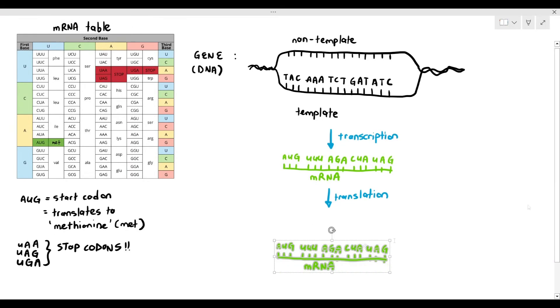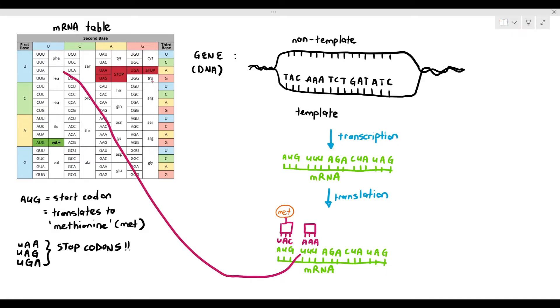Now, if the first codon is AUG, the tRNA has to be an anticodon of UAC, and the tRNA will carry an amino acid called methionine. I've consulted the table. Let's look at the second one. The codon is UUU. The tRNA has to have an anticodon of AAA, because of complementary base pairing. Let's consult the table. UUU anticodon, which amino acid does it translate to? It translates to an amino acid called phenylalanine, which is PHE.